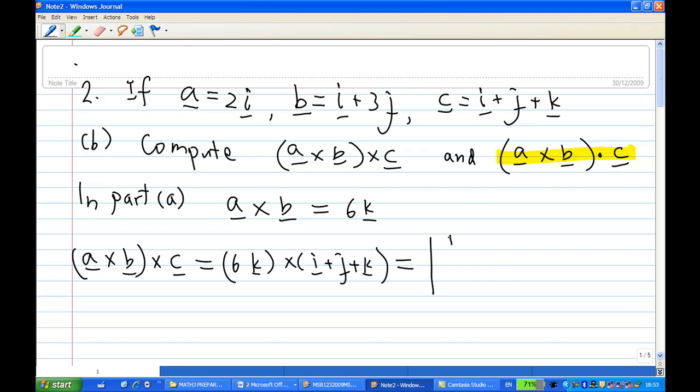Using the 3 by 3 determinant i, j, k in the first row, 6k means 0i, 0j and 6k. And i plus j plus k gives you 1, 1, 1.